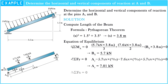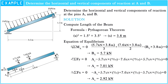The sum of forces along the x-axis equals zero. So: negative A_x plus 5.7 kN multiplied by 5/13, plus 7.6 kN multiplied by 5/13, minus 5.7 kN multiplied by 5/13, equals zero. Hence, A_x equals 2.92 kN.